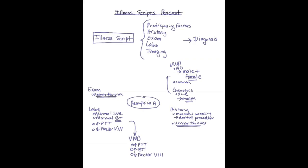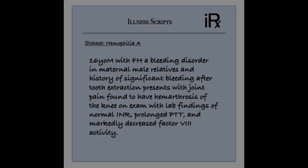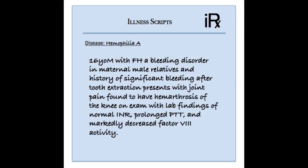For hemophilia A, for example, our script would read: a 16-year-old man with a history of a bleeding disorder in males on the mother's side, with excessive bleeding following a simple dental procedure, with findings of hemarthrosis of the left knee on exam. Lab findings include normal INR, normal bleeding time, prolonged PTT, and a markedly decreased factor VIII activity.